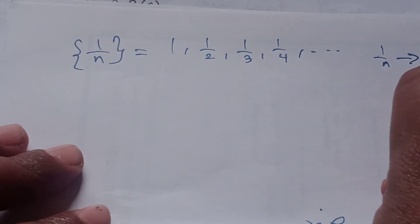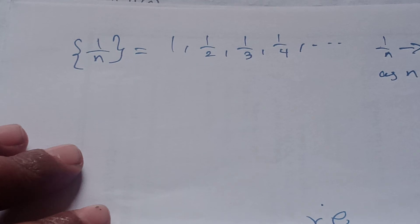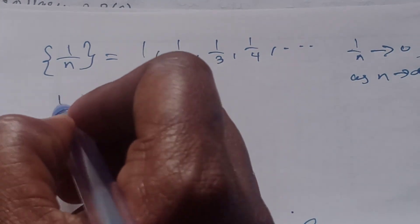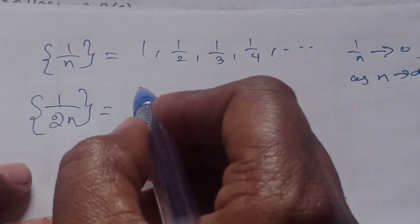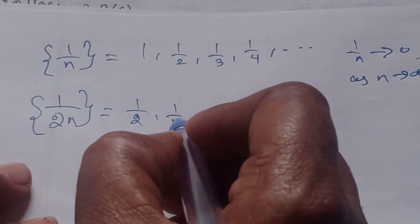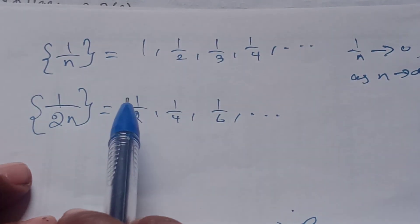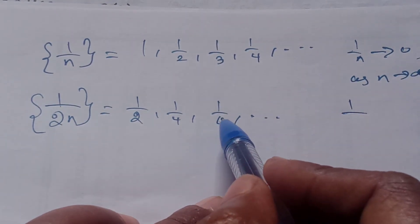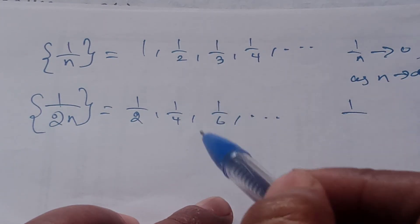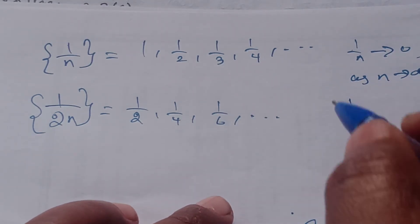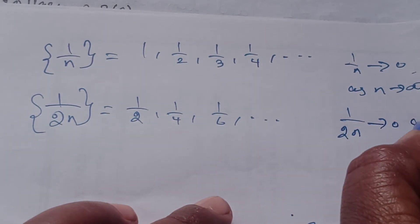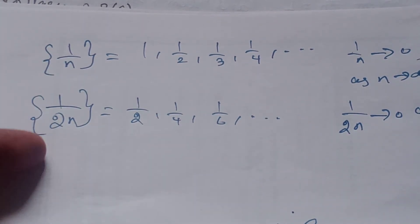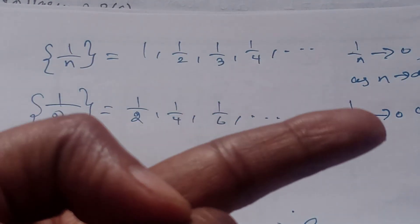For example, 1/n tends to 0 as n tends to infinity, so 0 is the limit of the sequence. If we take a subsequence of even terms, 1/(2n), which is 1/2, 1/4, 1/6, and so on, as n increases 1/(2n) also tends to 0. The convergent sequence has limit 0, and this subsequence also has limit 0. Similarly, taking the odd terms 1/(2n-1) gives 1, 1/3, 1/5, and so on, which also approaches 0.